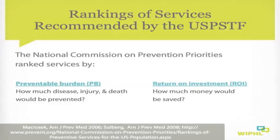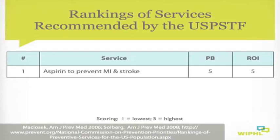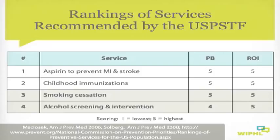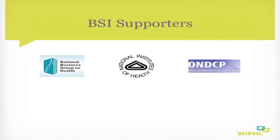They also assessed how much money could be saved if appropriate patients got the services. The number one service was recommending daily aspirin for patients at risk for heart attack and stroke, which received the highest rating for preventable burden and return on investment. Number two was childhood immunizations. Numbers three and four were tobacco and alcohol screening and intervention — ranked higher than many other services we've come to expect in primary care settings.